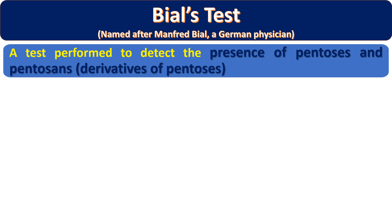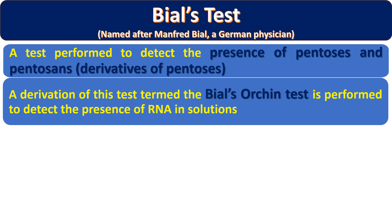Pentosans are polymeric compounds of pentoses. A derivation of this test, also called the Bial-Orcinol test, is performed for the detection of RNA in solutions, because RNA contains ribose sugar — a five-carbon sugar. Those pentose sugars present in RNA can be detected by this Bial-Orcinol test. You can remember this test name because it can come into MCQs.